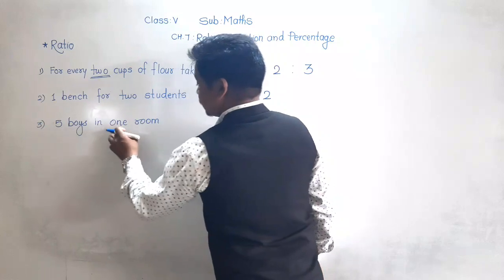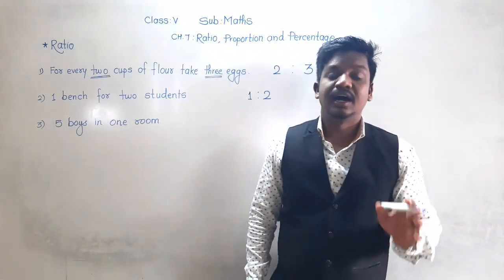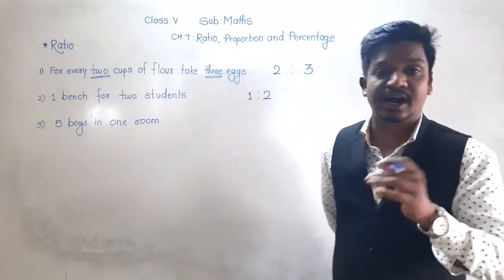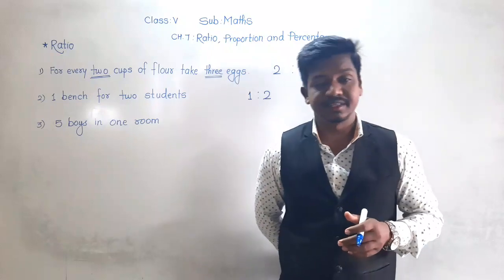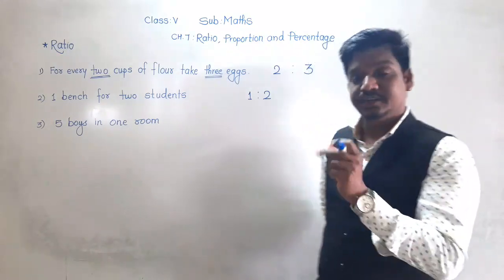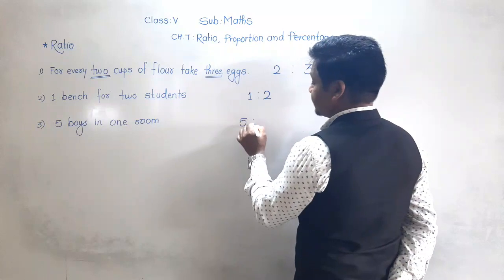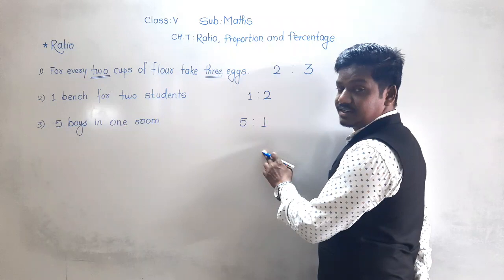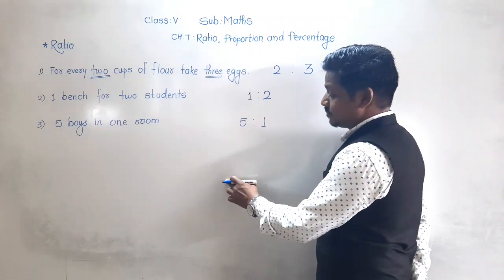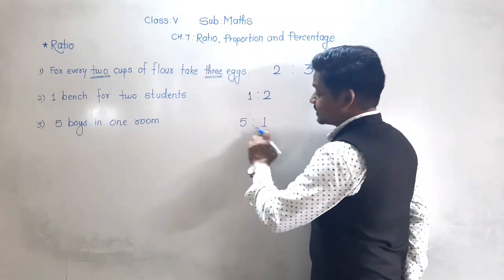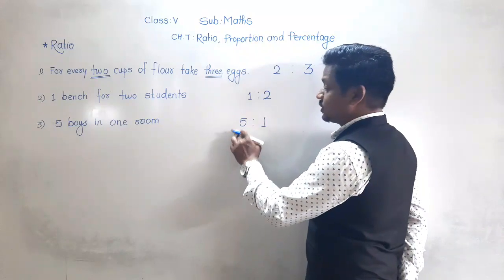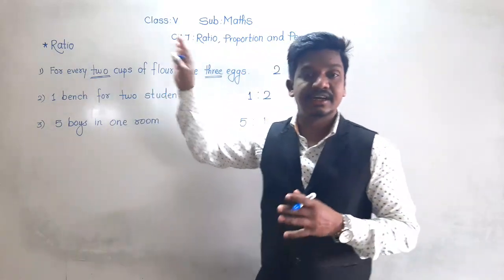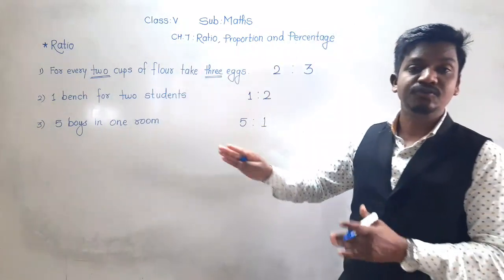Third example: 5 boys in 1 room. There is a hostel, and in each room how many students can be accommodated? In 1 room, 5 boys. If there are 10 boys, then 2 rooms are required. If there are 15 boys, then 3 rooms. So all these 3 sentences reflect the concept of ratio.